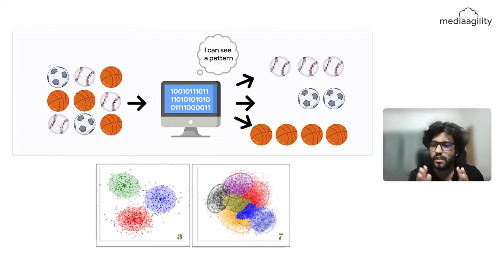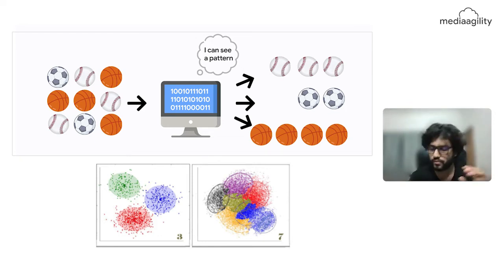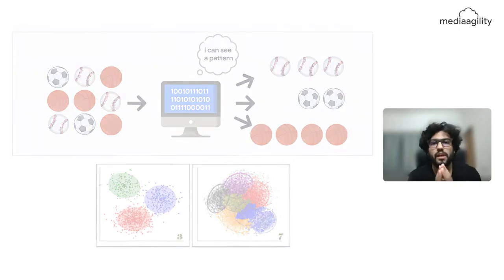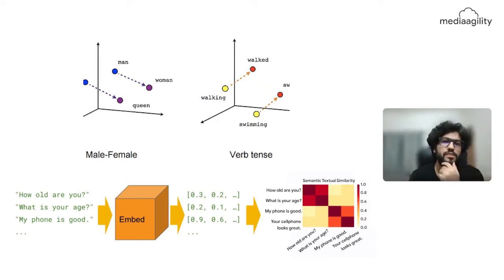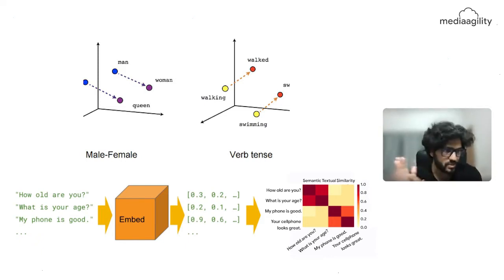So how do we do clustering on words? Words are not machine-interpretable — machines understand numbers and vectors. We convert words into vectors of numbers using algorithms like word2vec, which plots each word into a vector space. You can visualize this in 3D. Really interesting things emerge: for example, if you do king + woman − man, you get queen. Some very compelling properties appear when you create these word vectors.